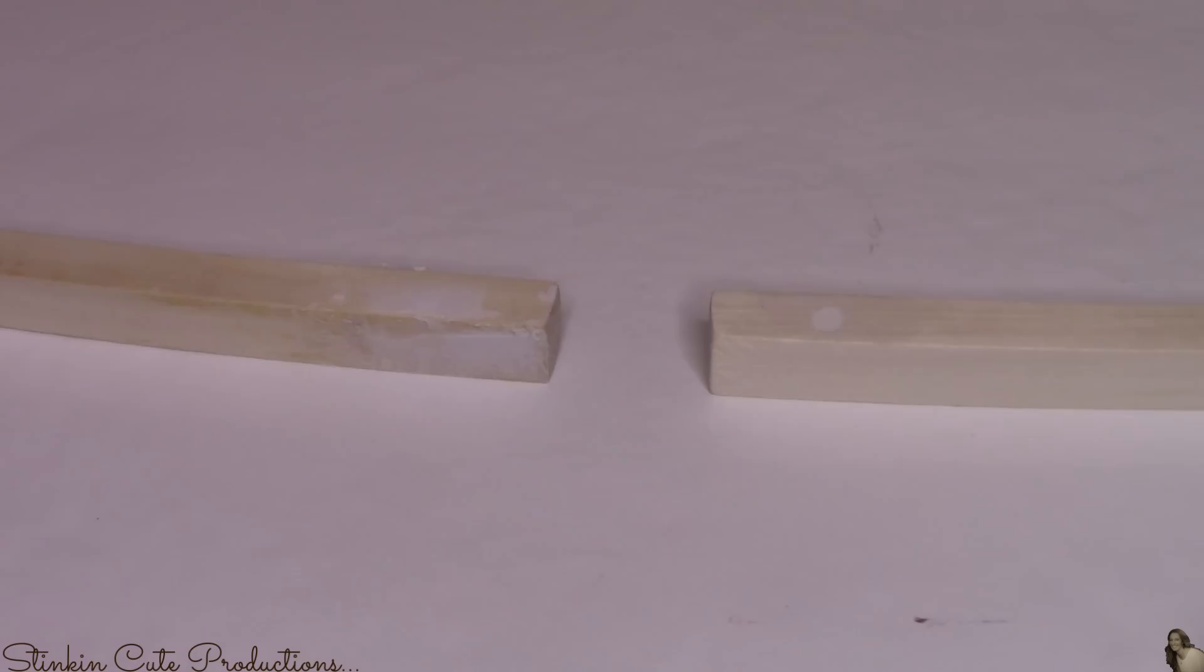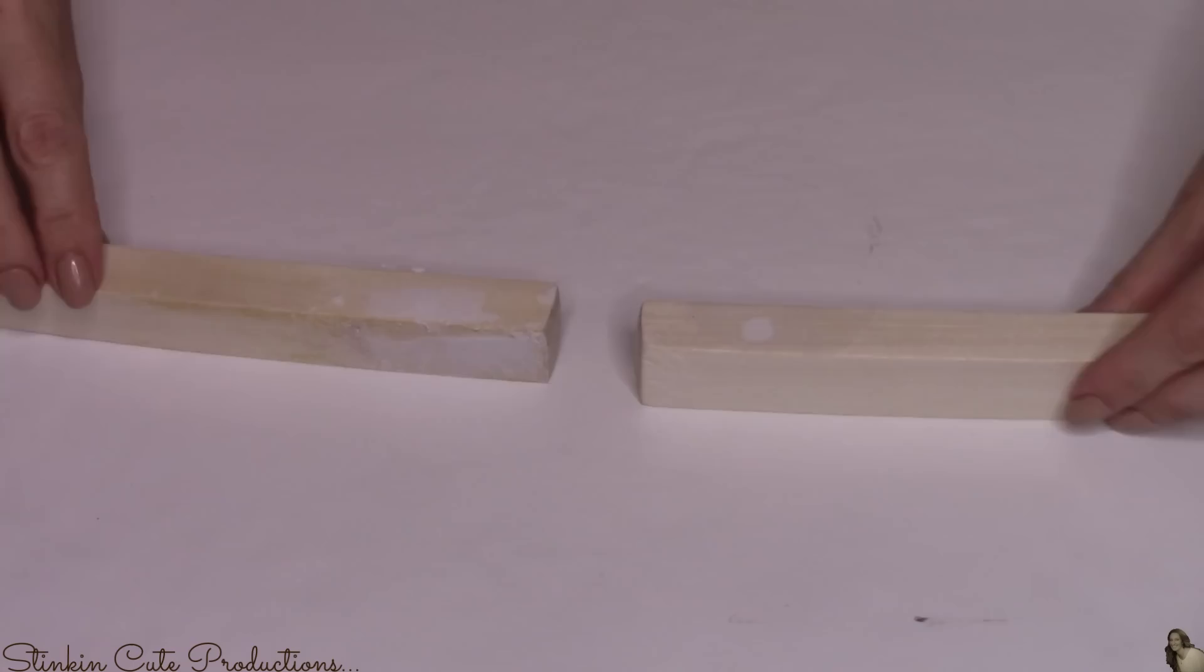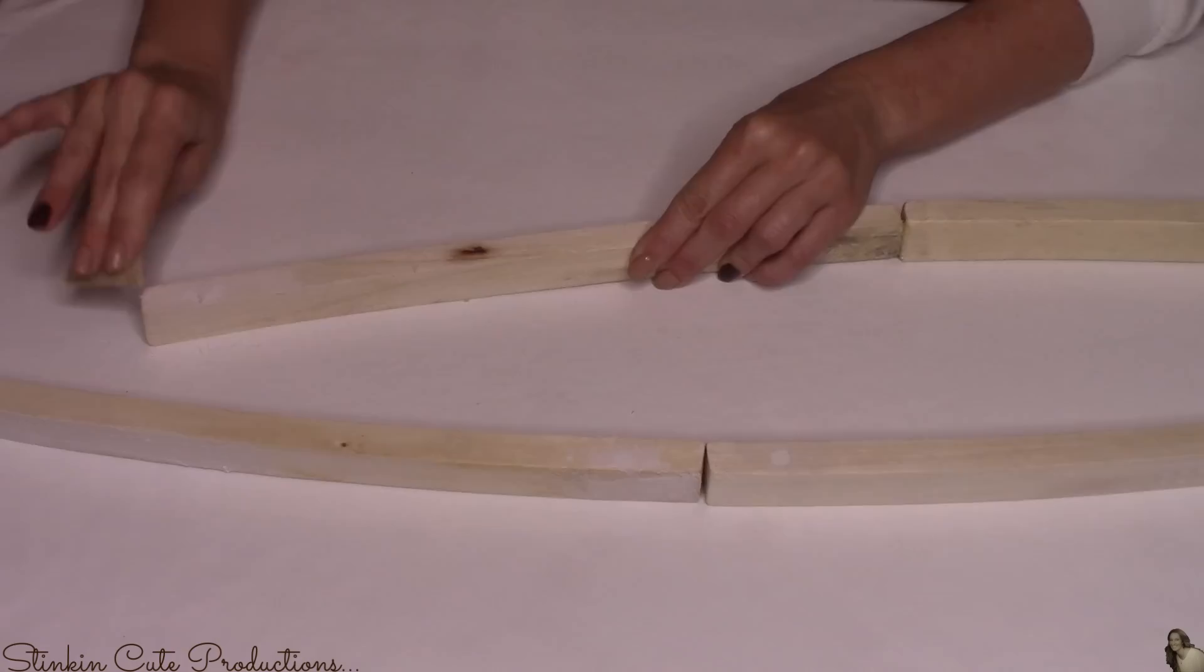Once I've got my holes all filled with the spackling, before it even dries, using some Elmer's wood glue, I'm gonna glue two of the handles together and I'm gonna do this twice. I figured why wait for the spackling to dry just to turn around and use the glue and wait for the glue to dry. So I just figured I'd glue them together now and let them dry overnight and in the morning we'll be good to go.